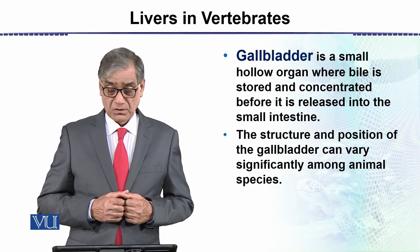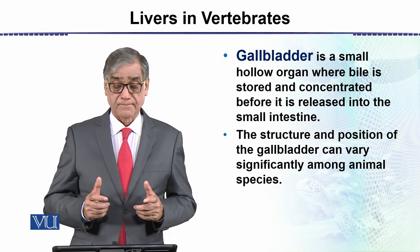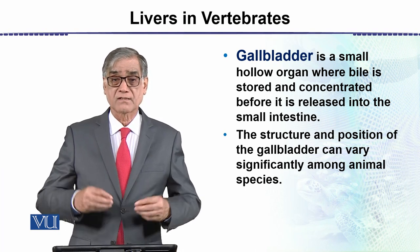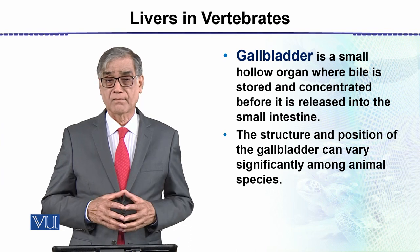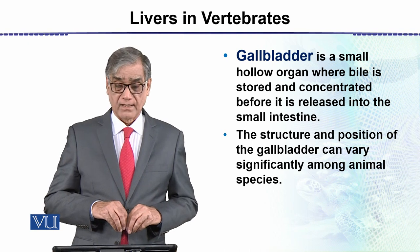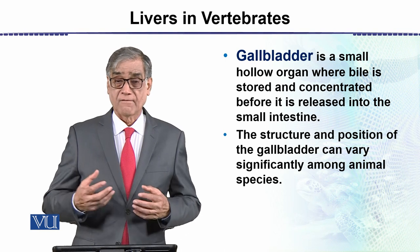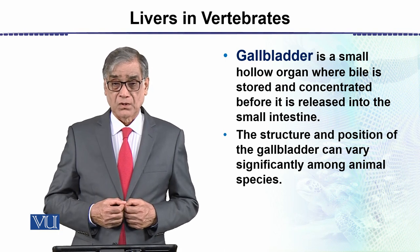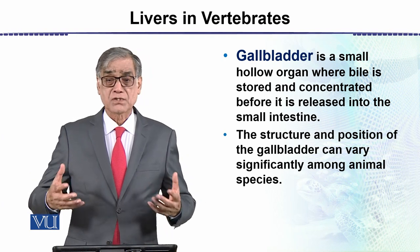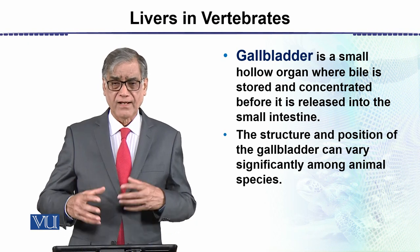Next is the gallbladder. The gallbladder is a small, hollow organ — like a bag — where bile is usually stored. The bile, which is a green pigment produced by the liver, is first stored in the gallbladder. Then, during the digestion process, bile is released. Animals that use a lot of fat in their body have relatively more bile production and usage.